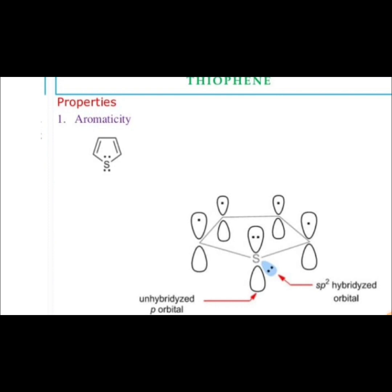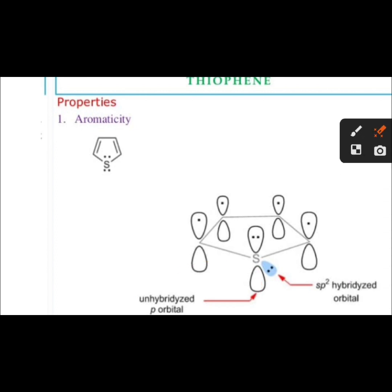In the last lecture we studied pyrrole and furan as heterocyclic compounds. Today we are studying thiophene as a heterocyclic compound. Here is the structure of thiophene, showing the unhybridized p orbital and the sp2 unhybridized orbital.